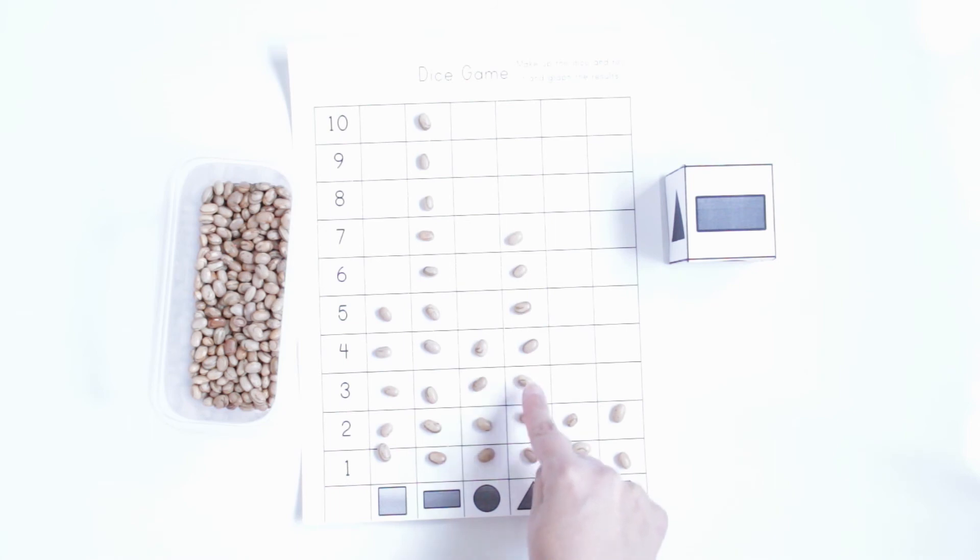One, two, three, four, five, six, seven. And the third one, the square.